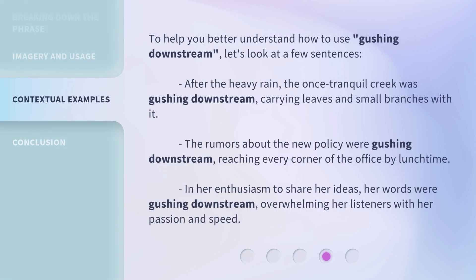To help you better understand how to use gushing downstream, let's look at a few sentences. After the heavy rain, the once tranquil creek was gushing downstream, carrying leaves and small branches with it. The rumors about the new policy were gushing downstream, reaching every corner of the office by lunchtime. In her enthusiasm to share her ideas, her words were gushing downstream, overwhelming her listeners with her passion and speed.